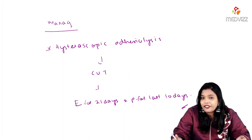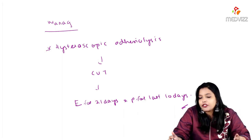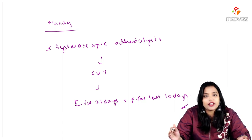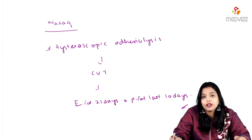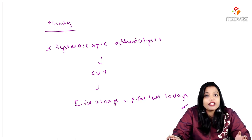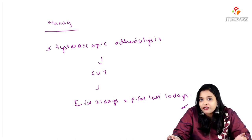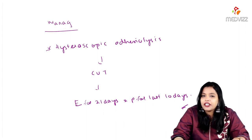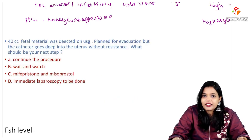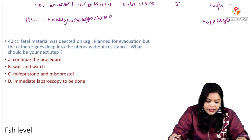The key takeaway from this question is you must know FSH values and what happens to FSH in hypogonadotrophic hypogonadism versus hypergonadotrophic hypogonadism. This applies to female infertility, male infertility, and amenorrhea cases — FSH plays a very important role in telling us where the problem lies.